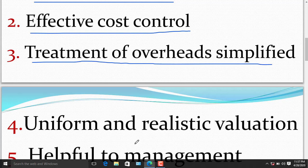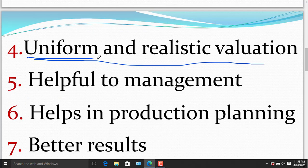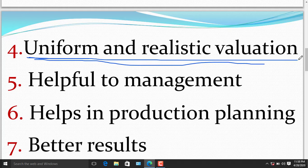The fourth benefit of marginal costing is uniform and realistic valuation. Marginal cost excludes the fixed overhead cost from product cost. The valuation of work in progress and finished goods becomes more realistic.